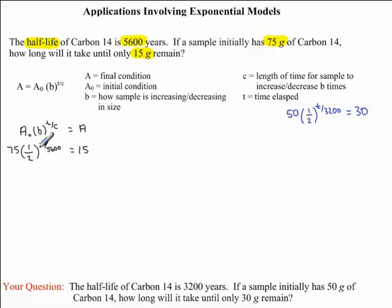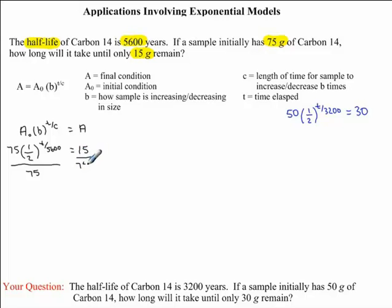Now coming back to our question, we want to isolate for our T variable, which means we need to get rid of all other numbers on this side of the equation. The operation between 75 and the power is multiplication, so to get rid of the 75 we divide both sides by 75. 75 divided by 75 is 1, so we're left with one-half to the exponent T divided by 5,600, which equals 15 divided by 75. Putting this in your calculator gives 0.2.